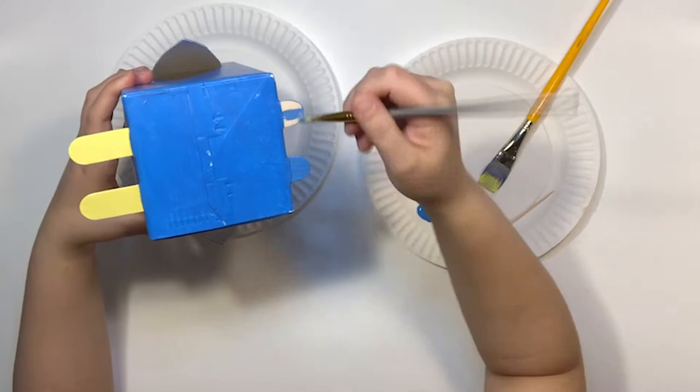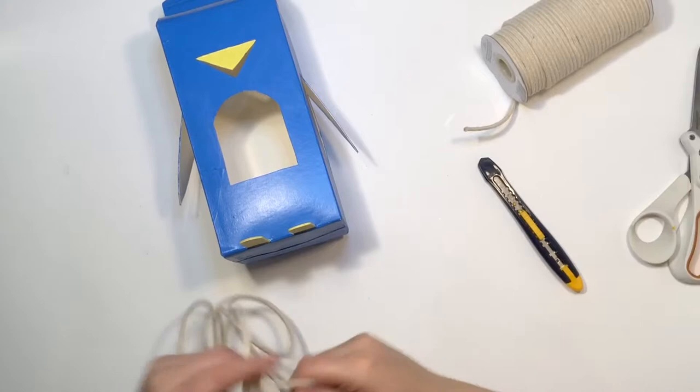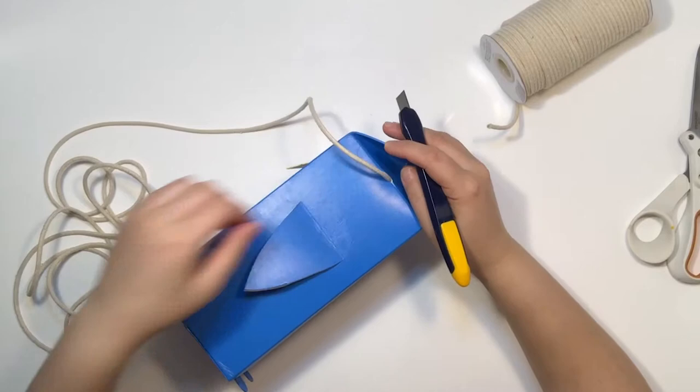Step six: add cord. To hang our bird we'll want to add a thick and durable cord. How much you need depends on where it will be hung. I would go longer for now and trim as needed. Take your craft knife again and cut a slit on either side of the carton and feed in the cord. You can use the tip of your knife to help push it in.